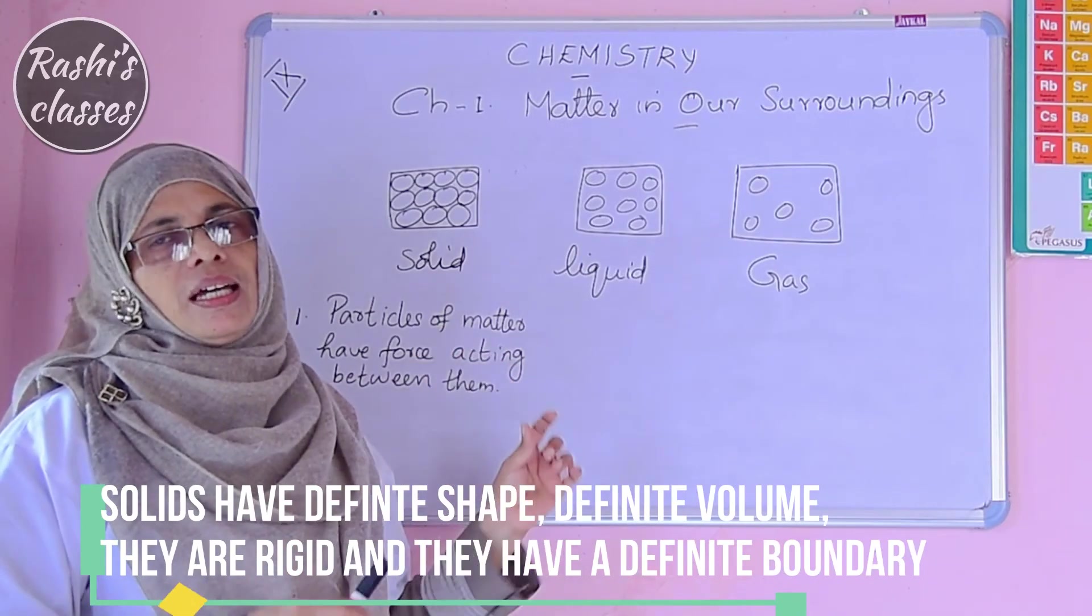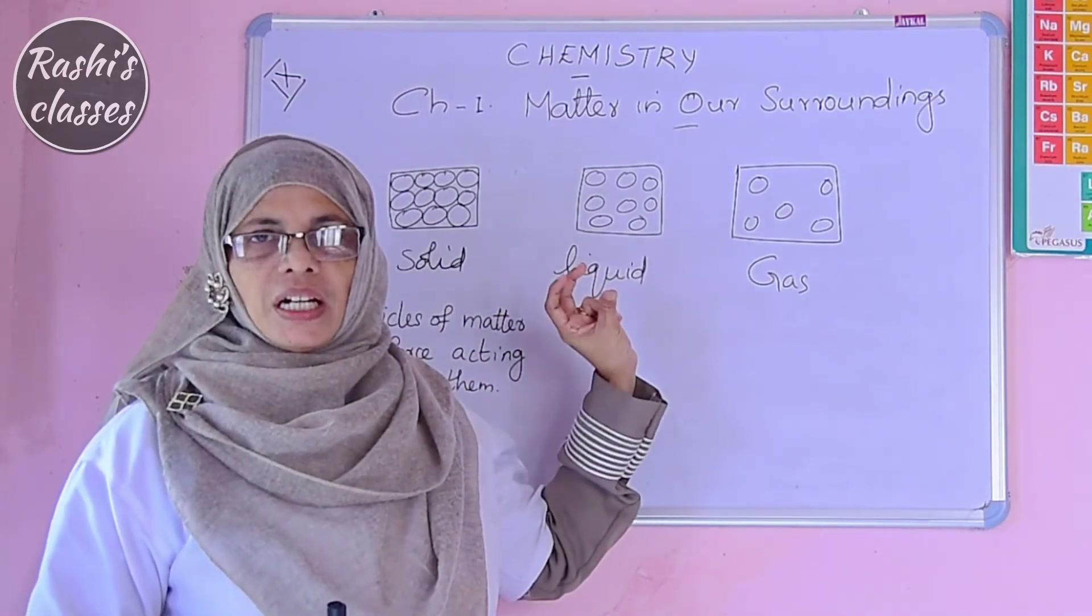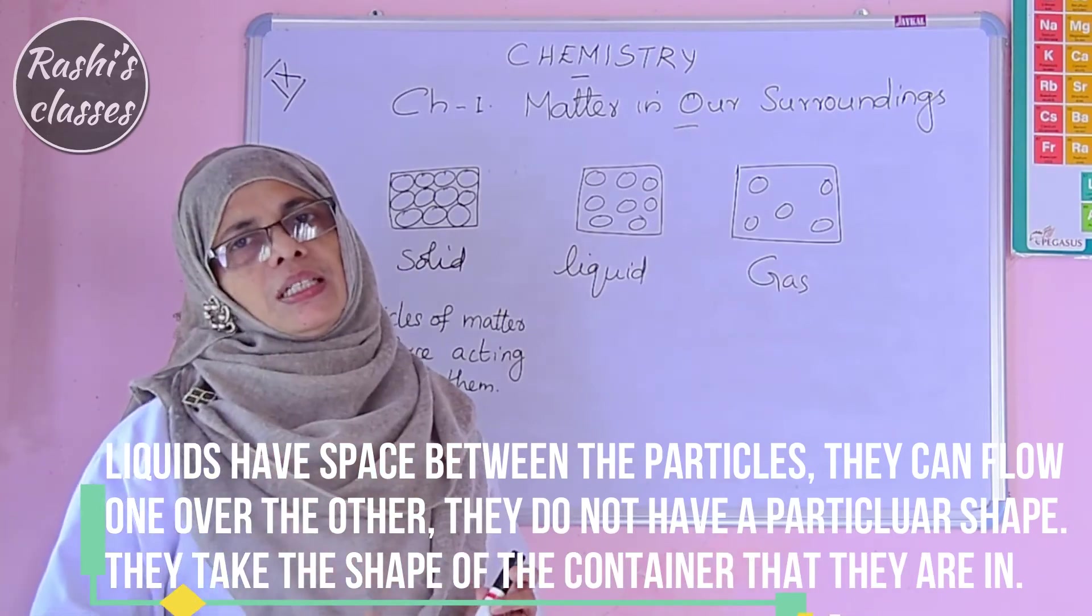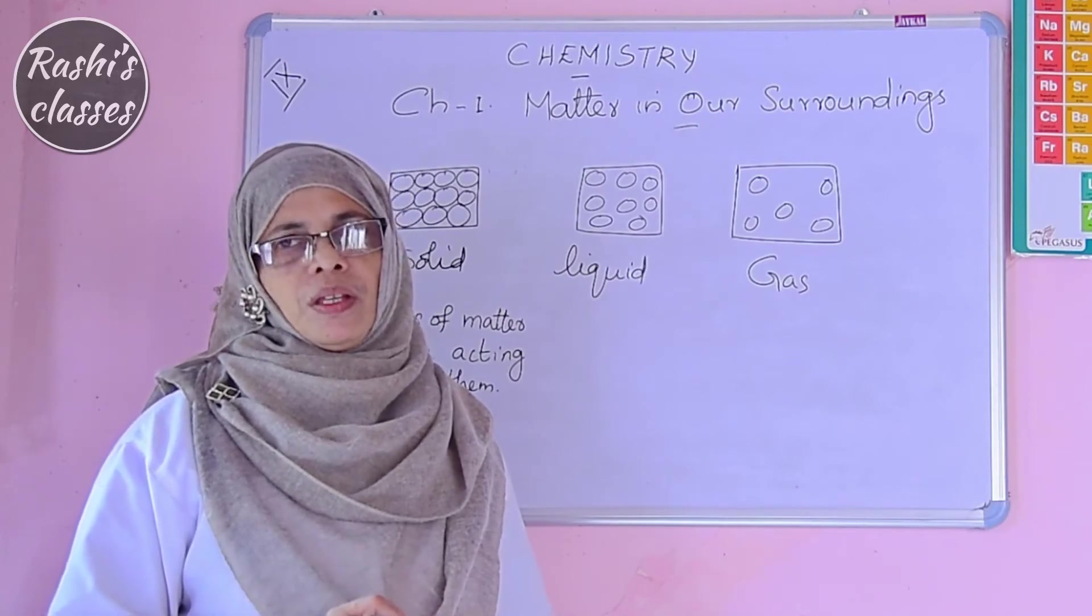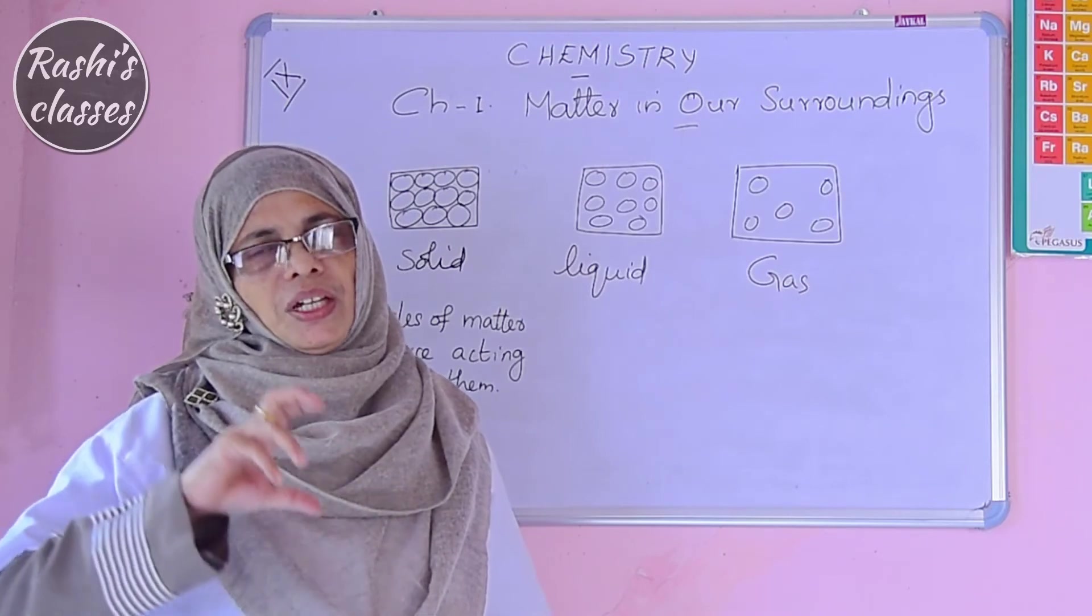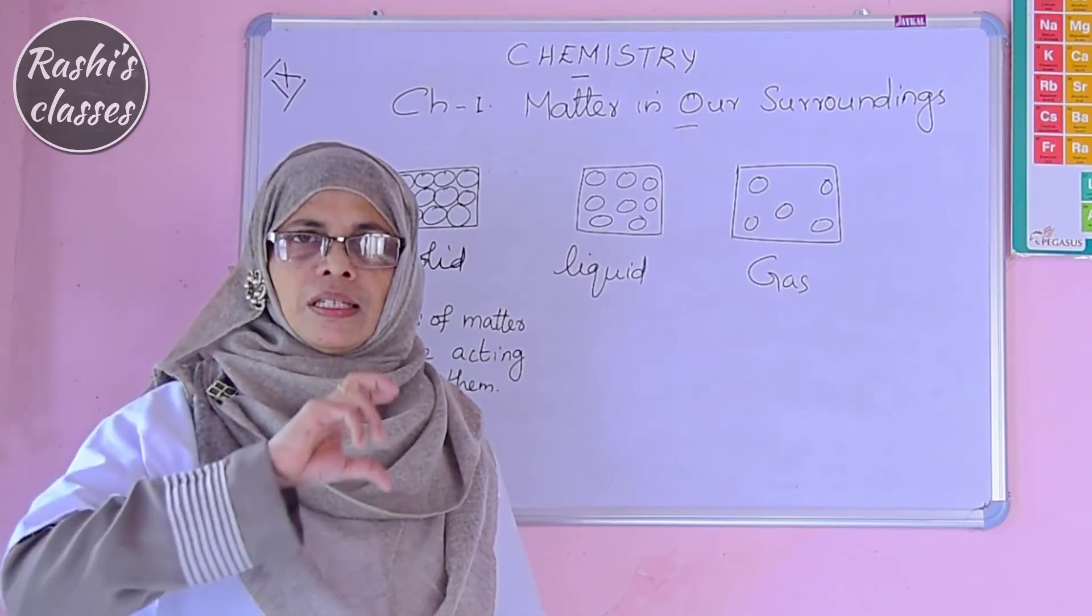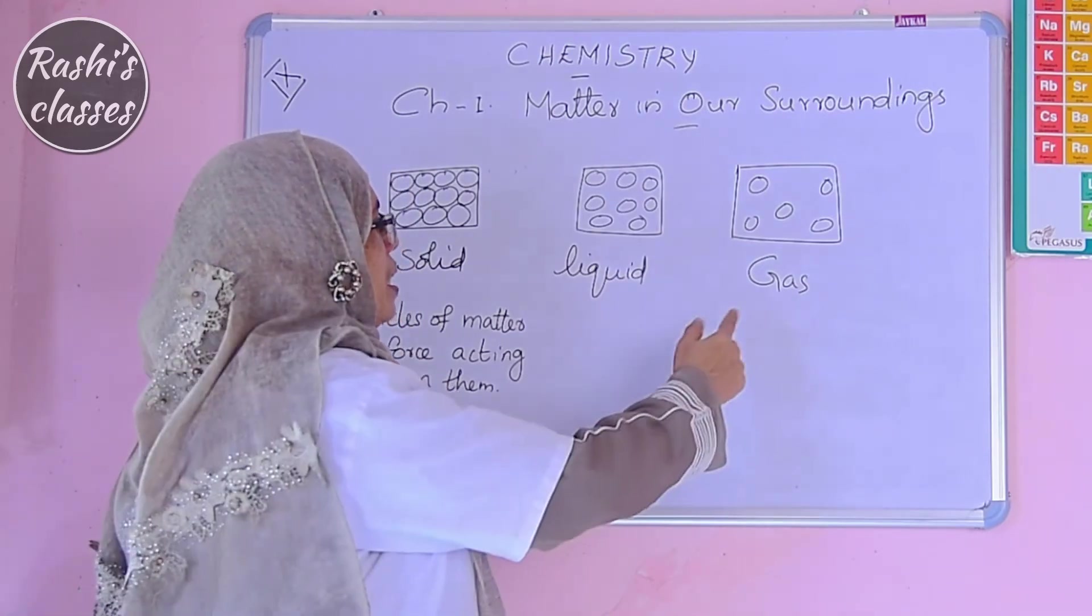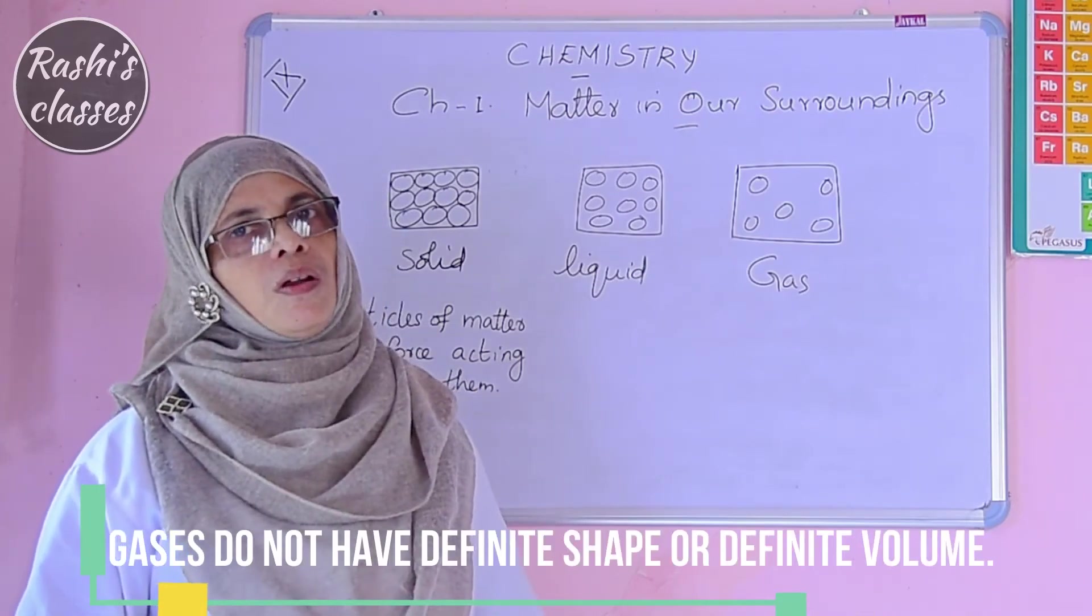In the case of liquids, the particles have space between them. They can flow and move one over the other. They do not have any particular shape. If we take it in a bottle, it gets the shape of the bottle. If we take it in a glass, it gets the shape of the glass. So it has the shape of the container in which it is kept. But in the case of gas, they do not have any definite shape or volume.